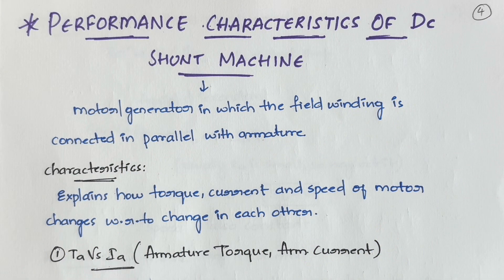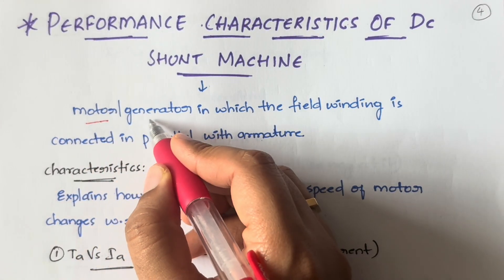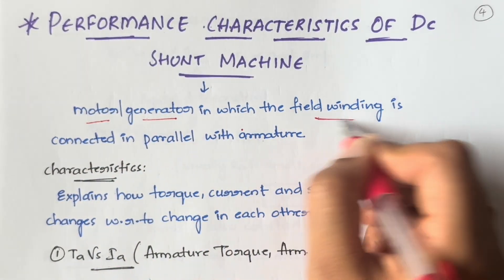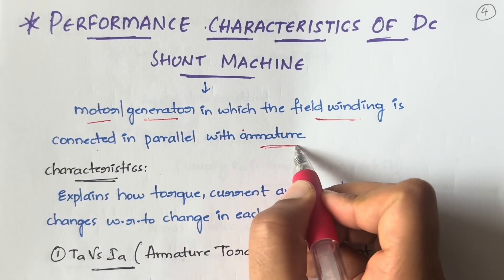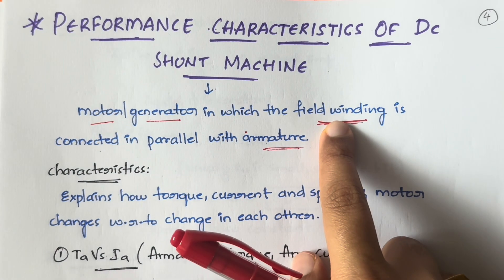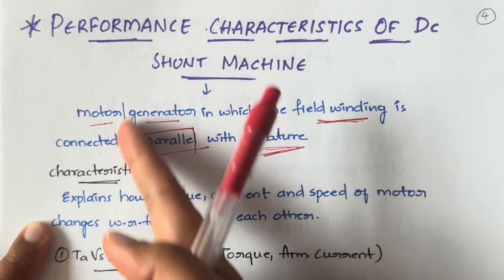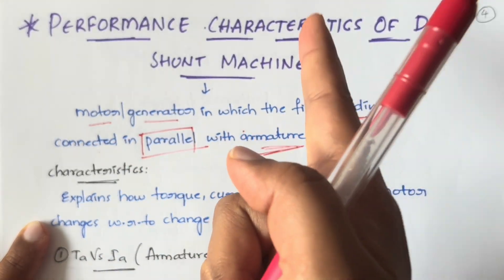Hello everyone, welcome back to my YouTube channel Trouble Free. In this video we are going to discuss the performance characteristics of a DC shunt machine. A DC shunt machine is a DC machine — either a motor or a generator — in which the field winding is connected in parallel with the armature. The field windings are the wires wound around the poles, and when connected in parallel with the armature, it is called a DC shunt machine.